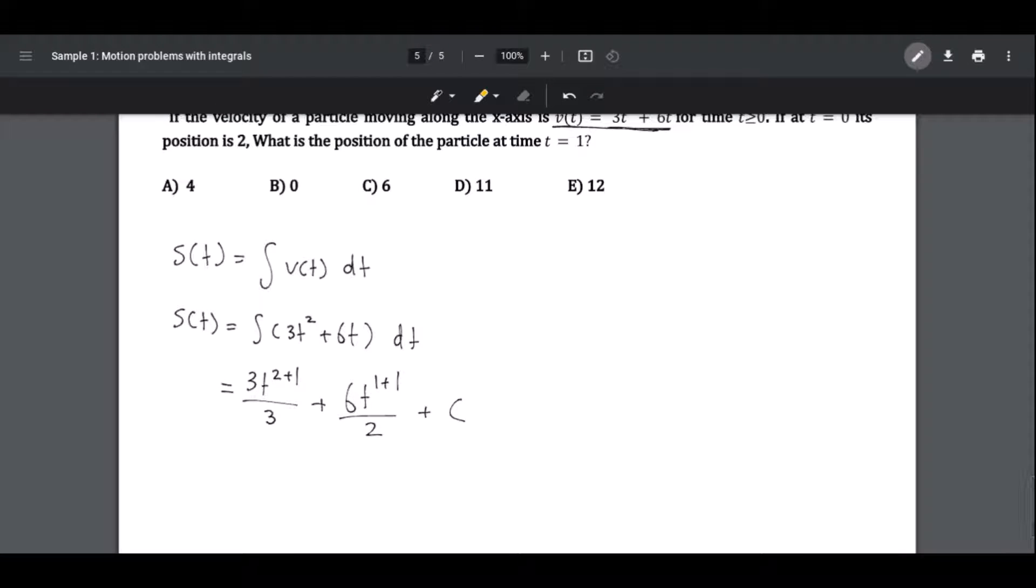Now we will simplify it. s(t), which is the position, is equal to 3t³ divided by 3 is t³, plus 6 divided by 2 is 3, t² plus c.